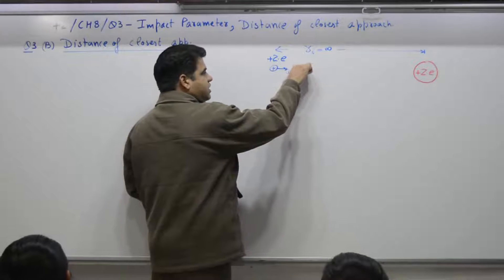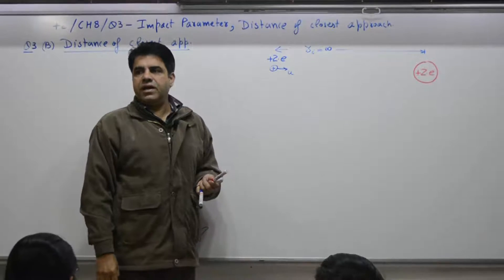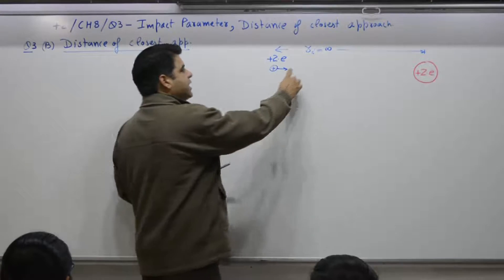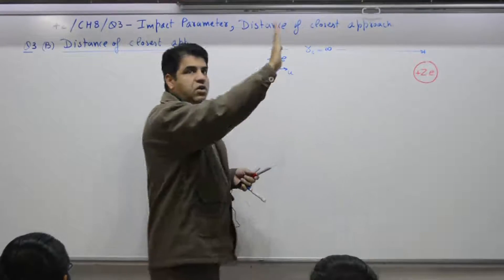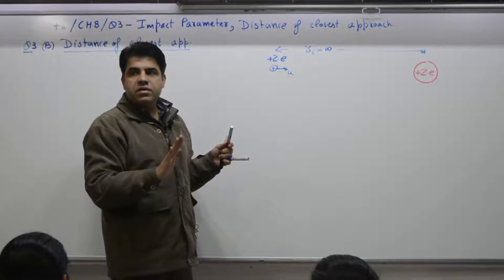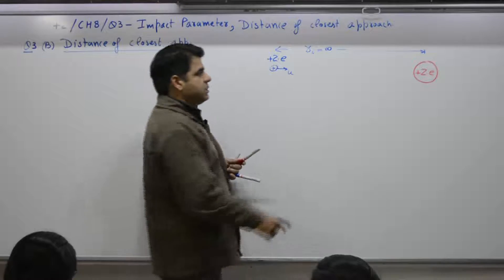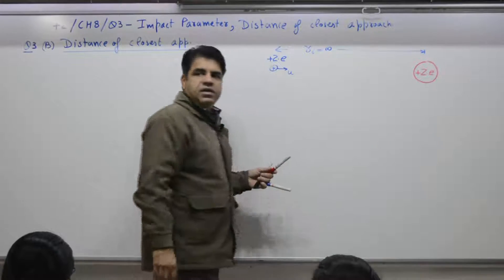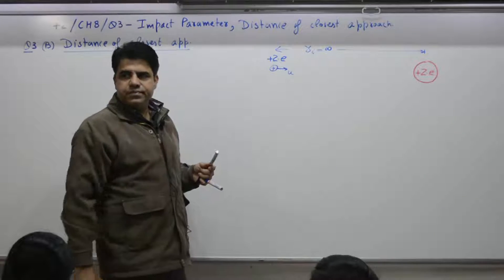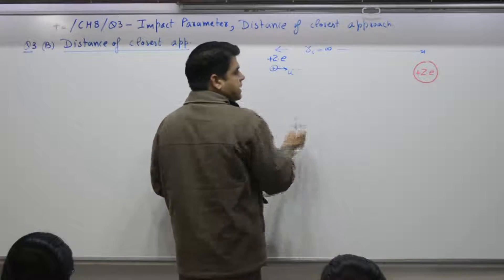As this alpha particle moves on, head-on collision, B is equal to 0. As it moves, its speed will increase or decrease? Decrease. Why? Positive, positive. Repulsion is there. So, it will have breaking effect. This nuclei is part of gold foil. Number of trillions of atoms are in a single unit. So, it also experiences a force of repulsion. But it won't move. Why? Because gold foil is a fixed structure.